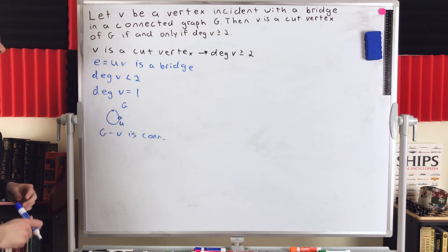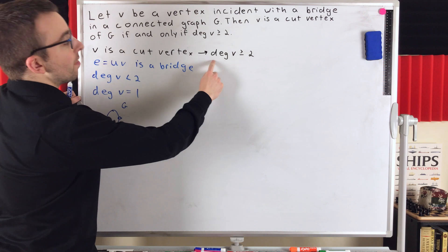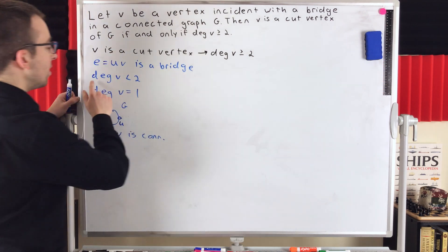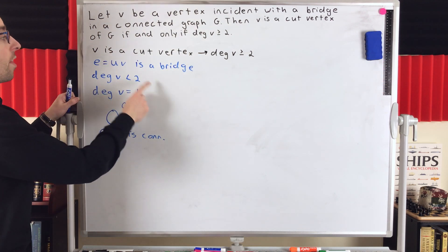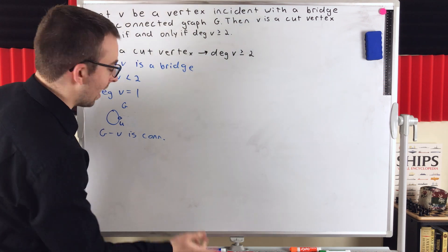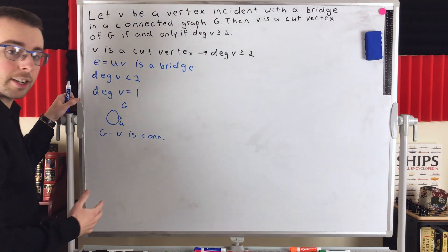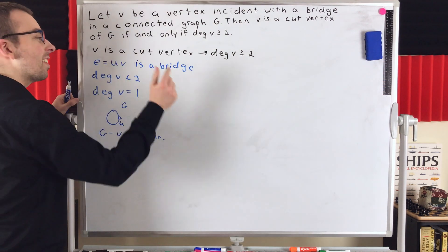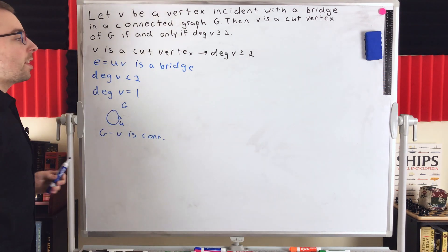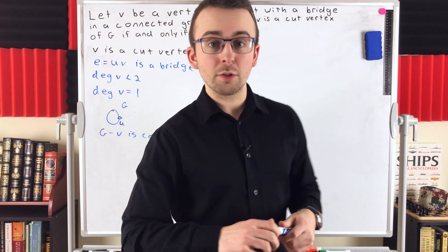This proves the first direction. We showed that if the degree of V is less than 2, then V is not a cut vertex because G minus V is connected. Thus, by contrapositive, if V is a cut vertex, then the degree of V is greater than or equal to 2.